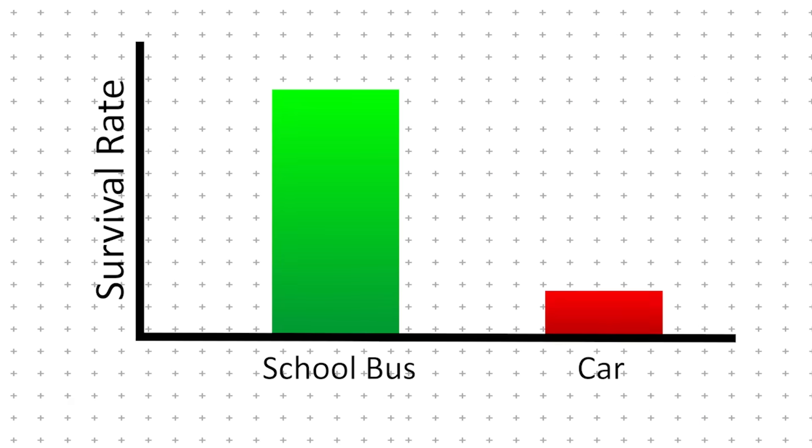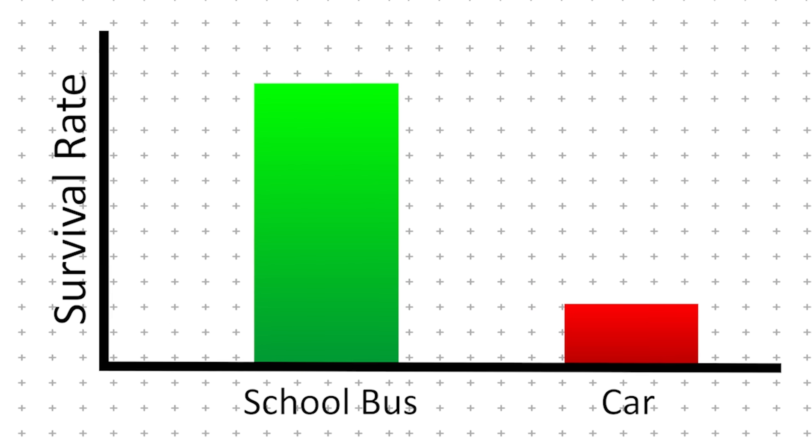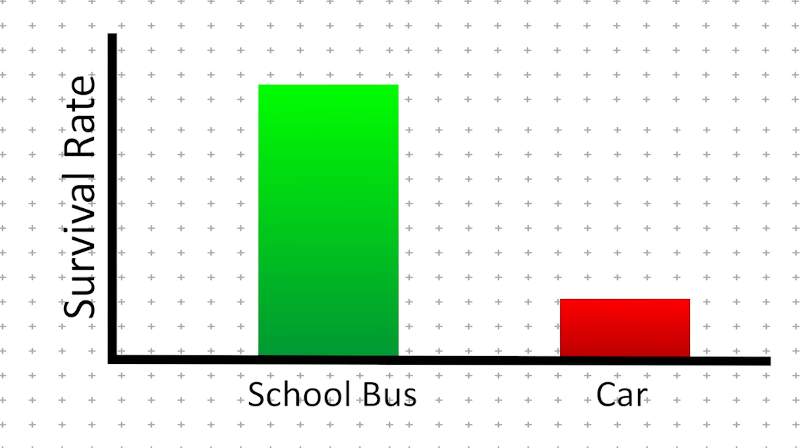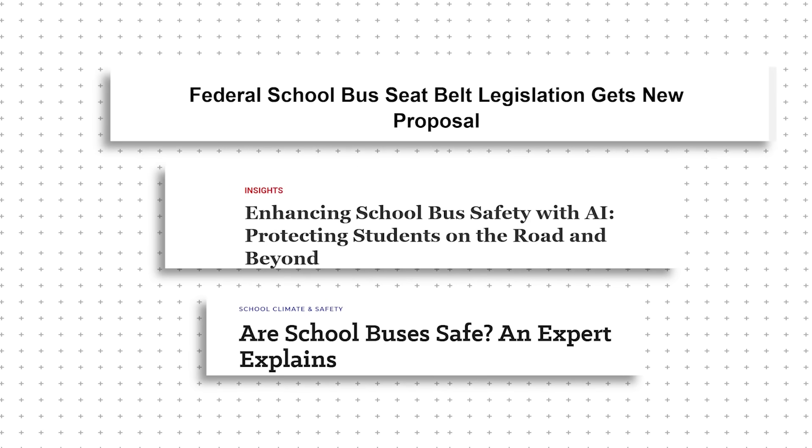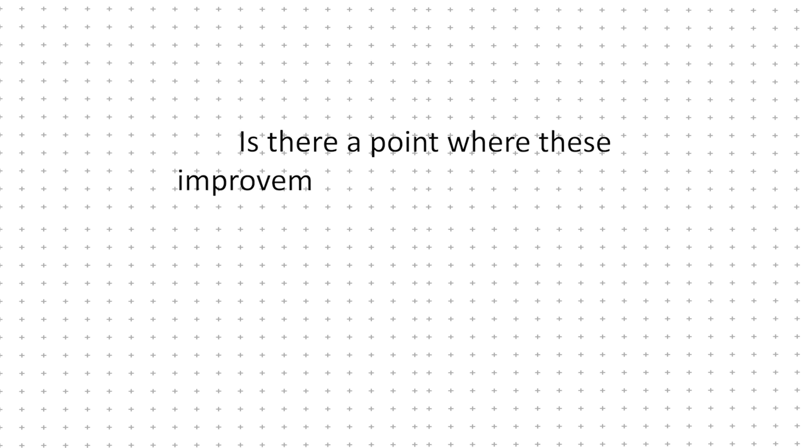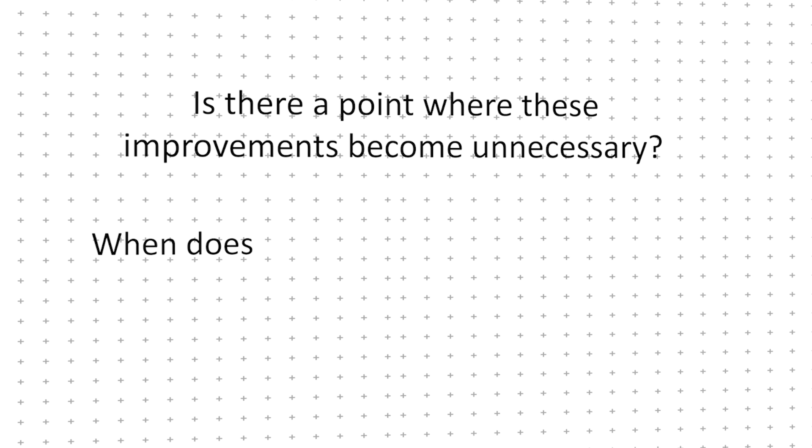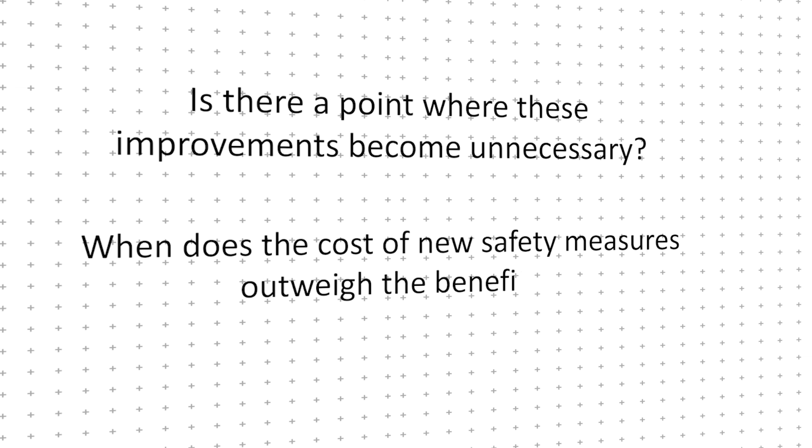School buses are already the safest vehicles on the road, with crash survival rates far exceeding any other mode of passenger transportation. Yet, every few years, new proposals emerge. More restraints. More sensors. More regulations. Is there a point where these improvements become unnecessary? When does the cost of new safety measures outweigh the benefits?